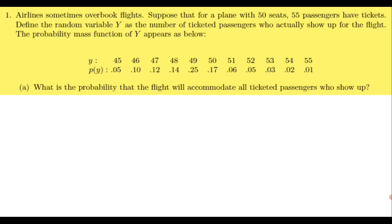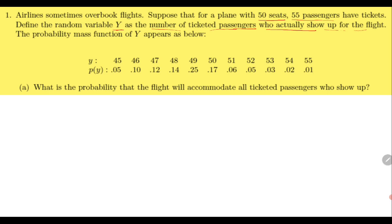The question says that airlines sometimes overbook flights. For a plane with 50 seats, 55 passengers have tickets. We define random variable Y as the number of passengers who have tickets and who actually show up for the flight. The probability distribution is given, so P(Y) means probability that capital Y equals y. For example, P(Y = 46) = 0.10, meaning the probability that 46 passengers show up is 0.10.